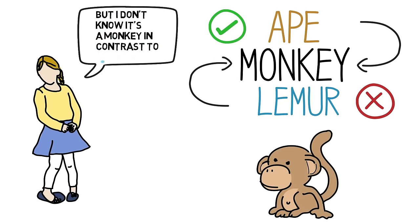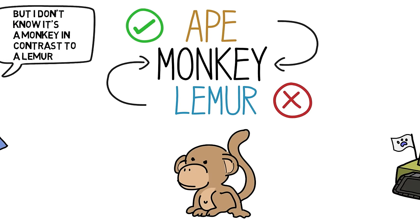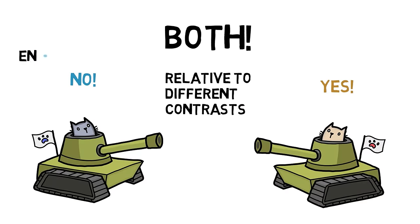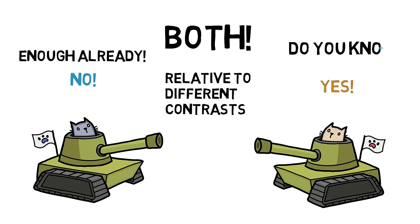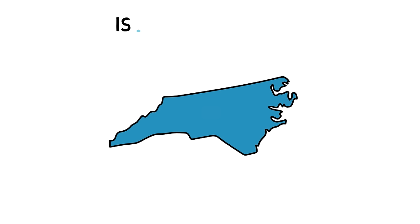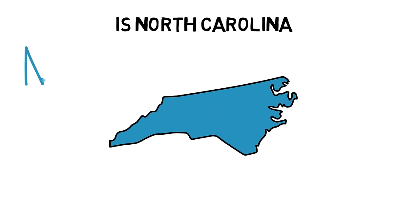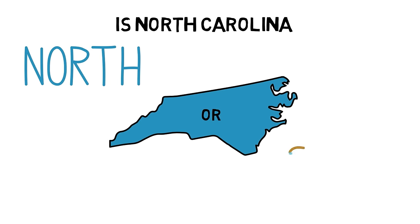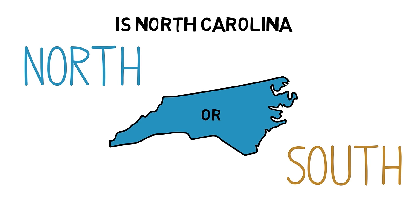This reply always annoys critics. They retort: 'Enough already — do I know or not know that the animal is a monkey?' Contrastivists reject that question as too simple to be answered precisely. It's like asking whether North Carolina is North or South. You cannot answer that question until you add a qualification: North or South of what?